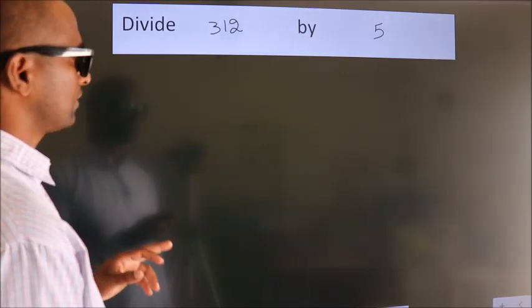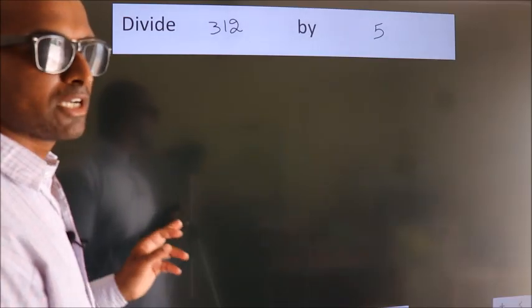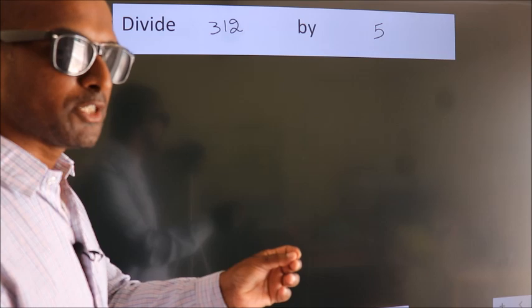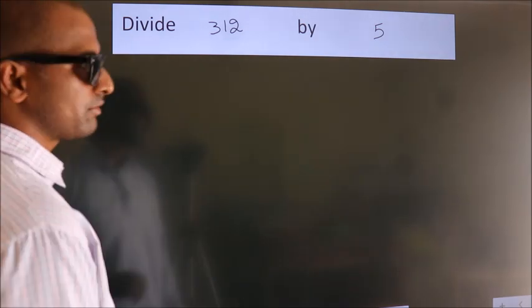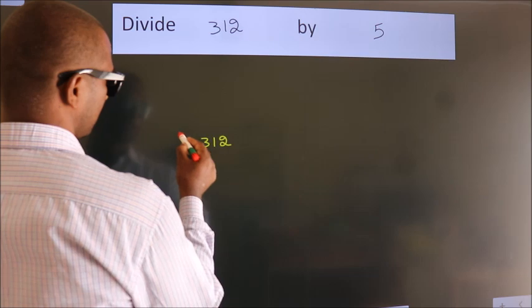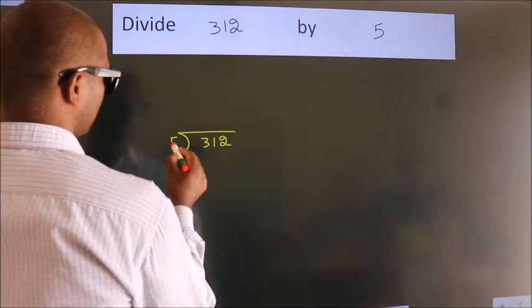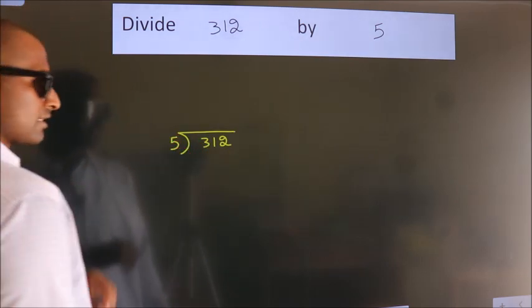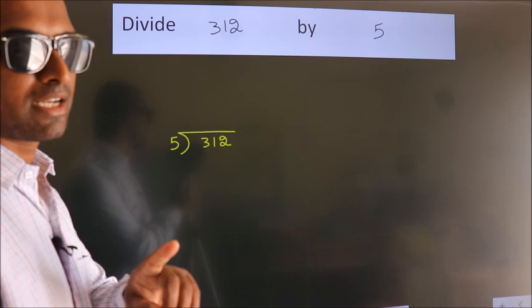Divide 312 by 5. To do this division, we should frame it in this way. 312 here, 5 here. This is your step 1.